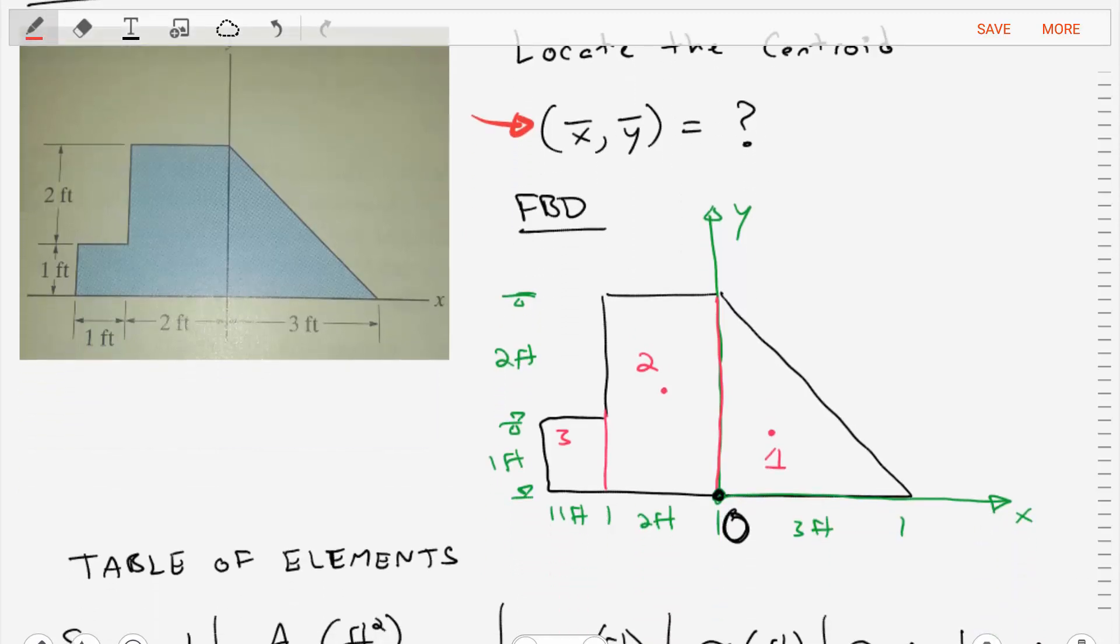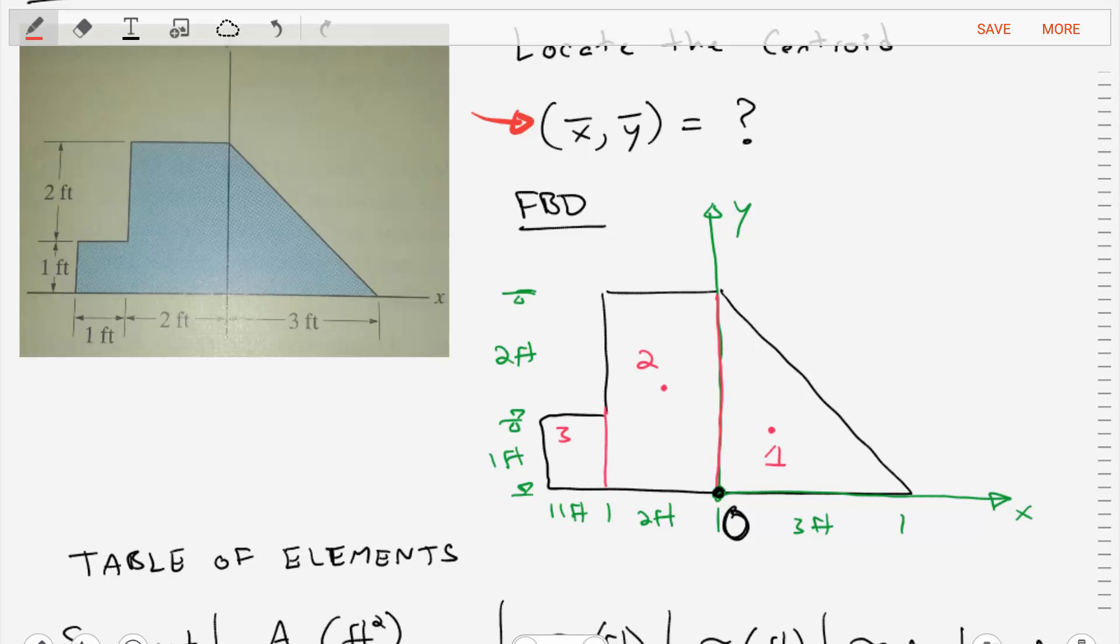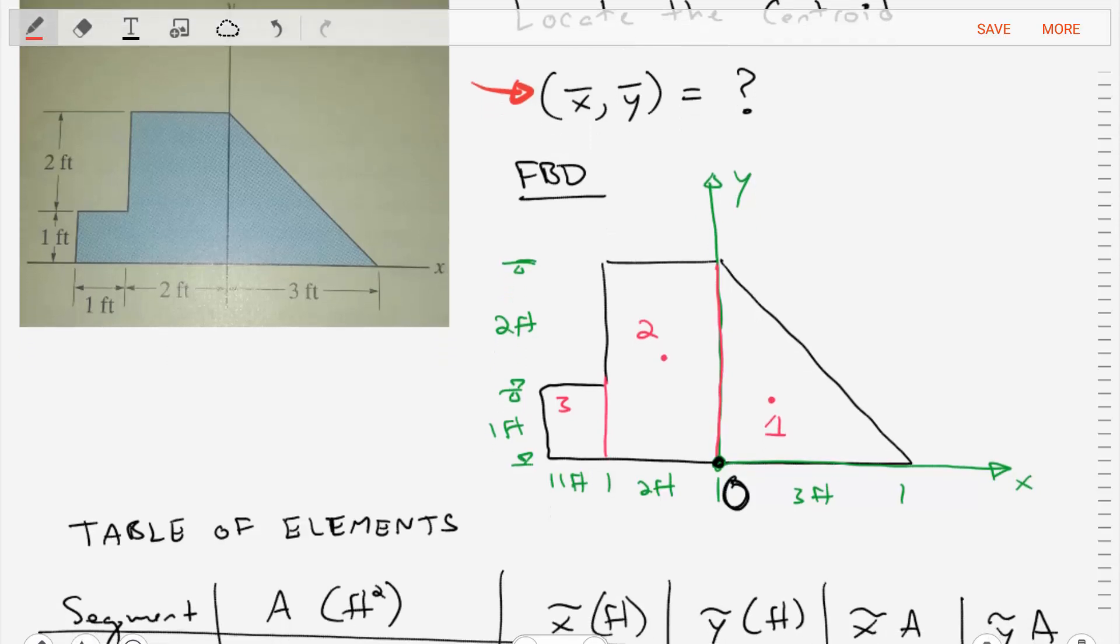Let's start with creating a free body diagram. In this diagram, we're going to create those individual areas of interest. Area 1 is going to be the triangle. Area 2 is going to be a rectangle. And area 3 is going to be this square.